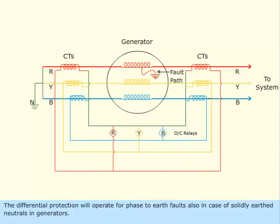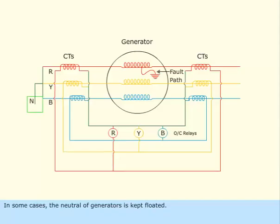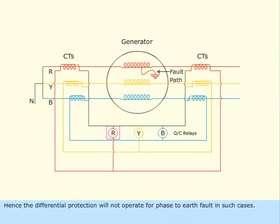The differential protection will operate for phase-to-earth faults also in case of solidly earthed neutrals in generators. In some cases, the neutral of generators is kept floated. So, there will not be any fault current flowing under phase-to-earth fault. Hence, the differential protection will not operate for phase-to-earth fault in such cases.